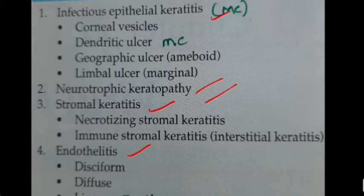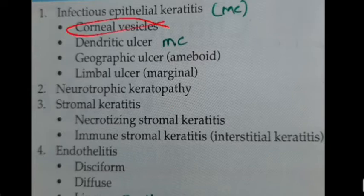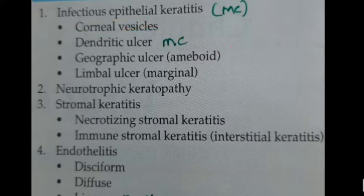In infectious epithelial keratitis, we have corneal vesicle formation, dendritic ulcer, geographical ulcer, and marginal ulcer. In stromal keratitis, we have necrotizing stromal keratitis and immune stromal keratitis. In endothelitis, we have disciform, diffuse, and linear types.